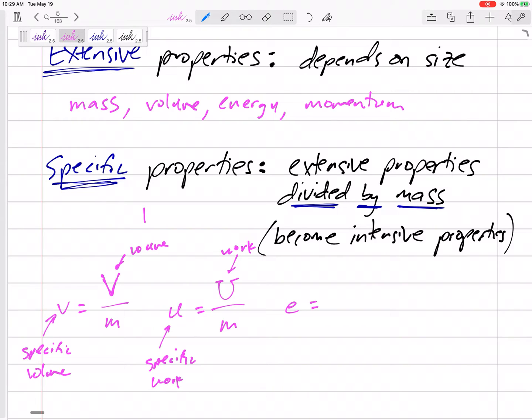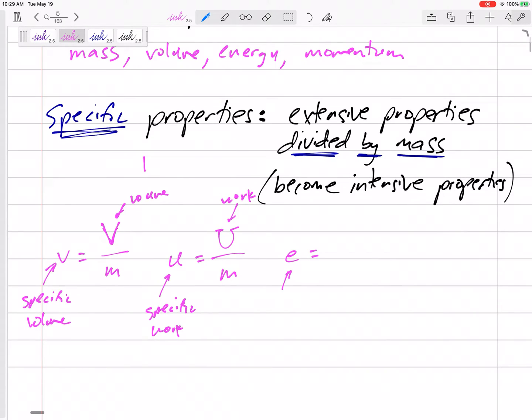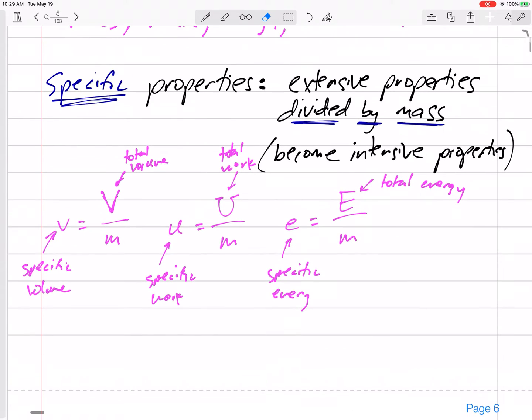And another one is lowercase e, specific energy. Specific energy is uppercase E, total energy divided by mass. This is total energy. So some of these are like total. We take the total divided by the mass to get specific.